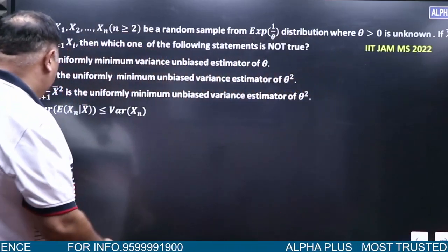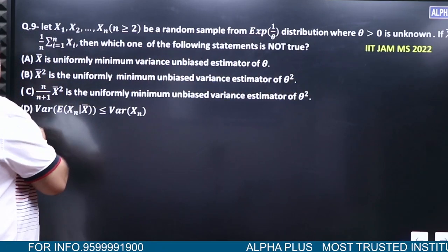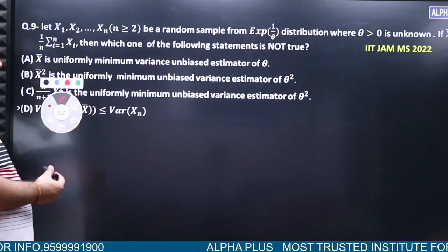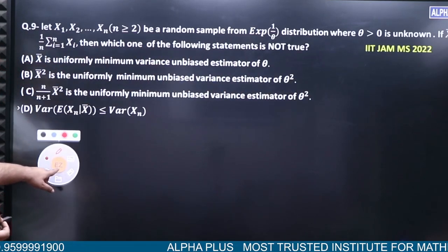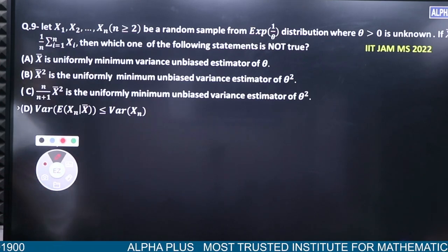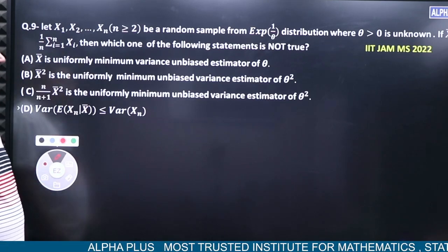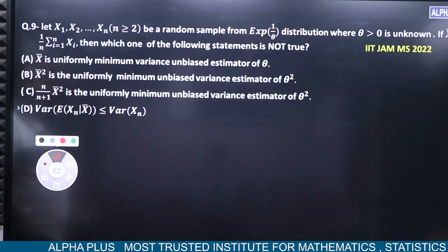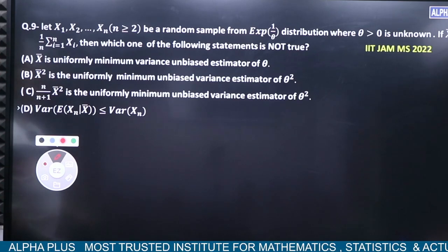This is a question, brother. Let's do it first. X1 to Xn will be a random sample from exponential distribution where theta greater than 0 is unknown. If X bar is this, then which of the following statements is not true?